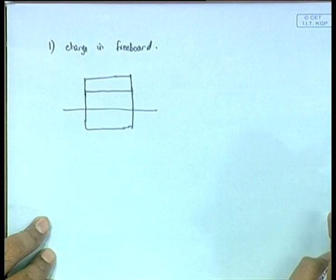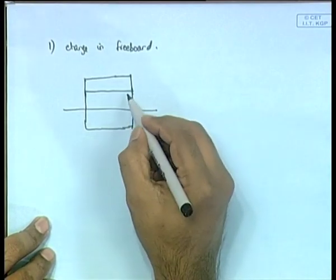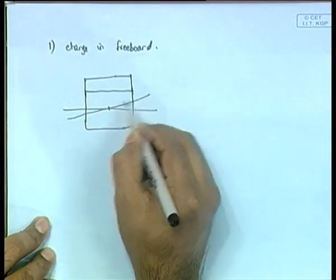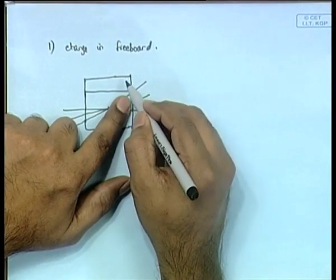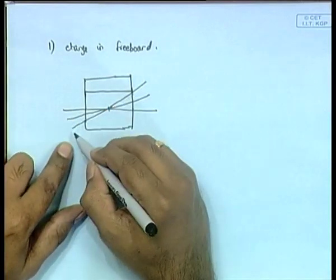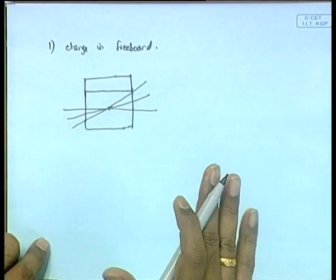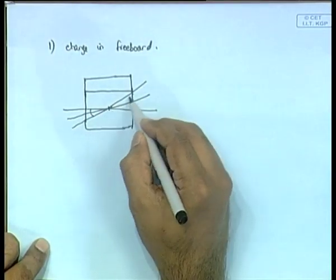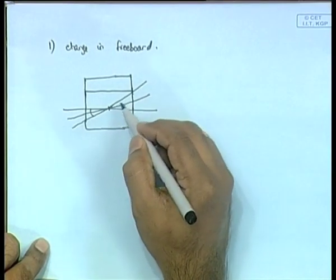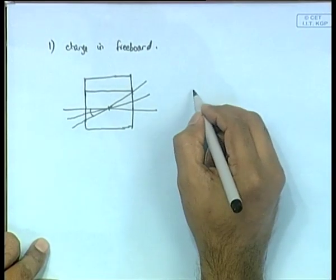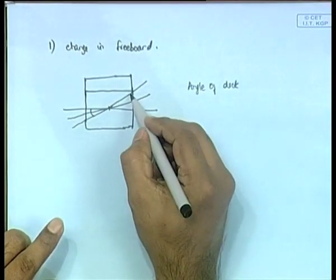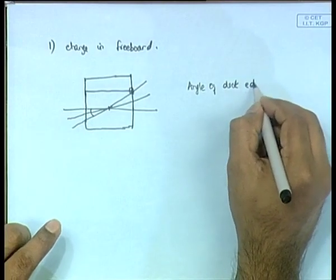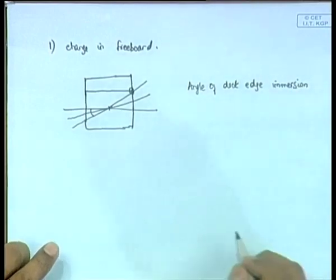What is the direct implication of an increase in freeboard? There is what is known as the angle of deck edge immersion. Suppose the ship keeps heeling. Initially it heels to some angle, then as it heels further, the waterline touches the deck edge. The angle where the waterline hits the deck — where the deck edge has just come under the water — is known as the angle of deck edge immersion. As the name suggests, the deck edge has immersed; it has just come under the water.